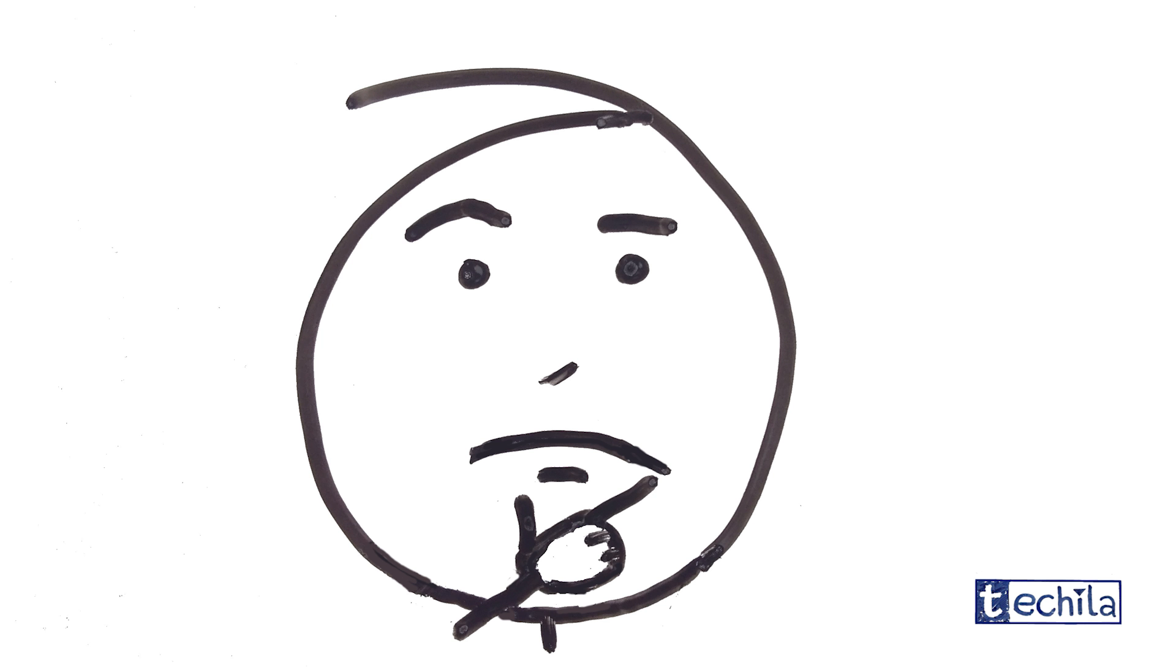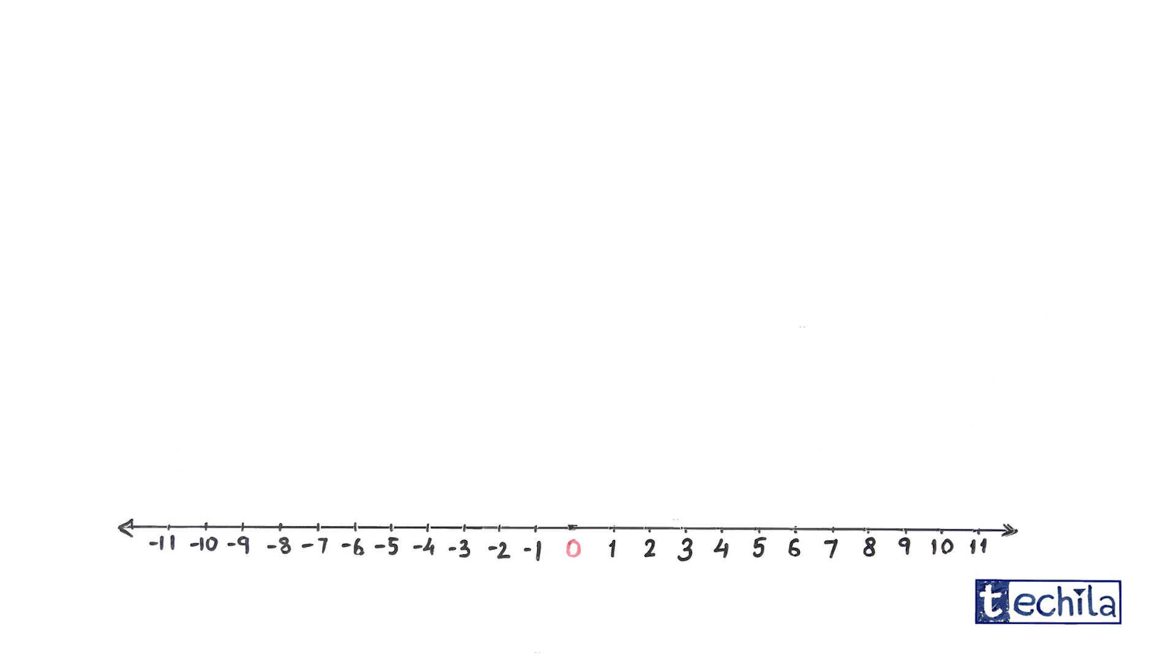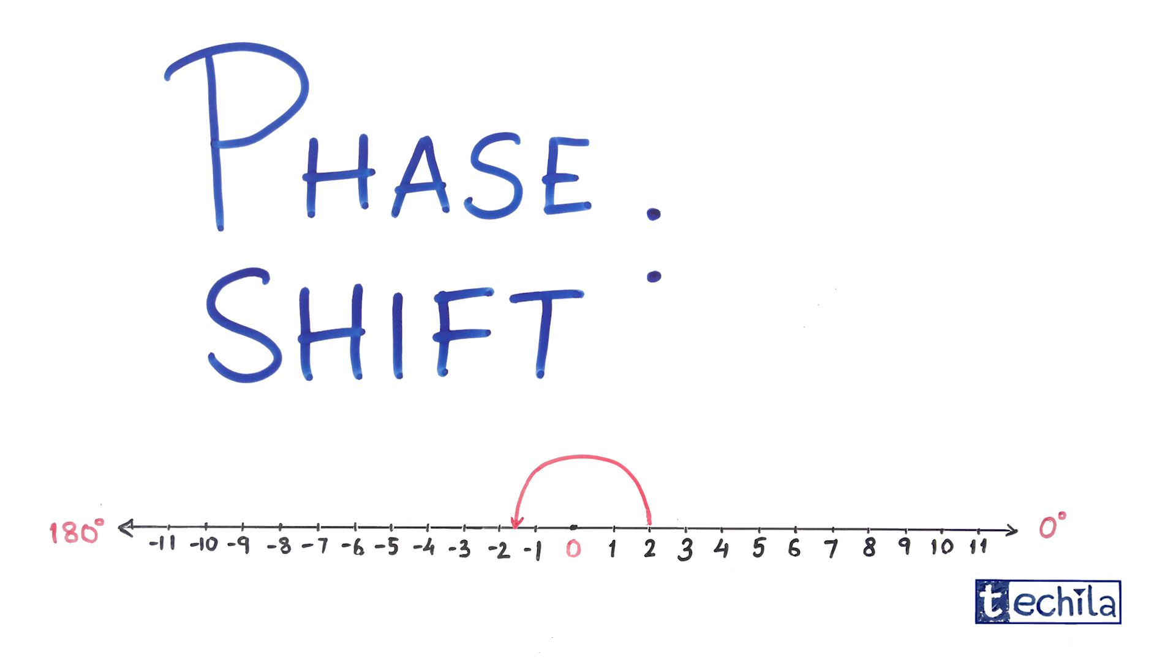This can also be seen in a different perspective. Taking number 0 as the origin, the negative number line makes an angle of 180 degrees with the positive number line. That is, it is said to have a phase shift of 180 degrees with the positive line.